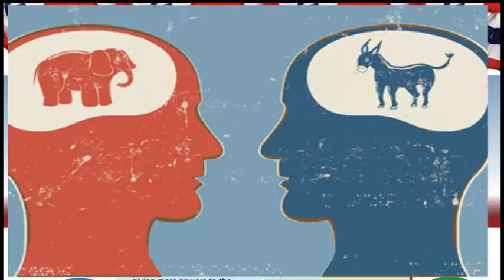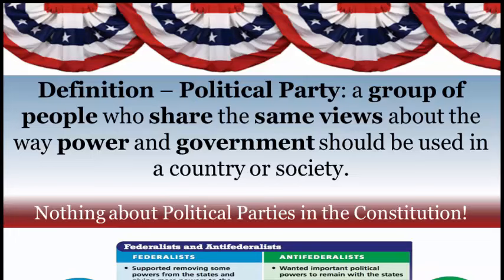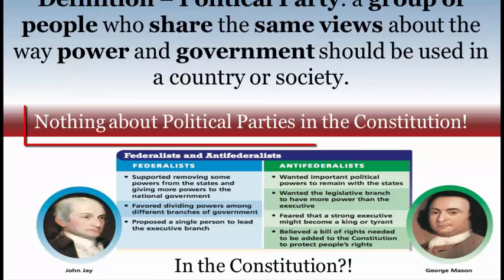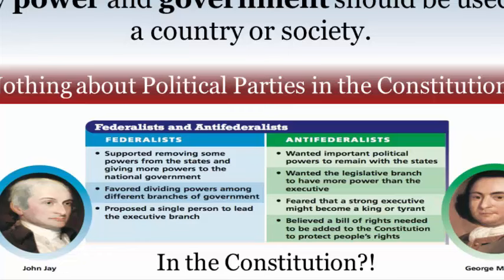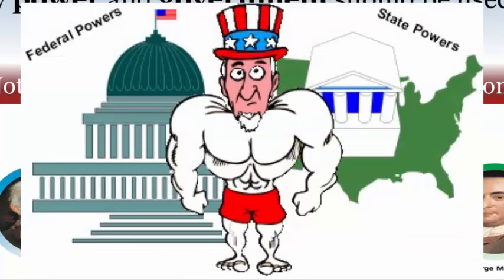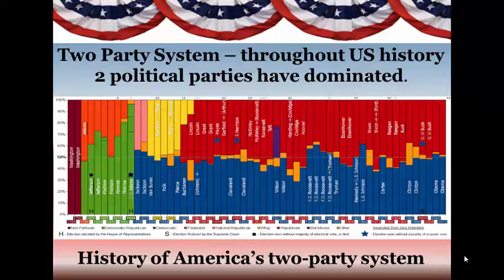Most Americans pick one of the two major parties that they share the most in common with. Something to keep in mind, especially for your state exam, is that there is nothing about political parties in the Constitution — they just happen naturally. From our previous video, the Federalists and the Anti-Federalists went on to become the Democratic Republicans. These first parties were started by people who disagreed about the power and responsibilities of the government — basically, how big should the government be and how much should it do?